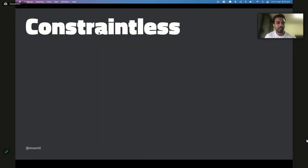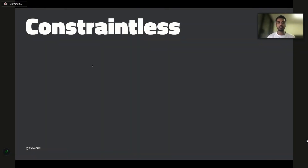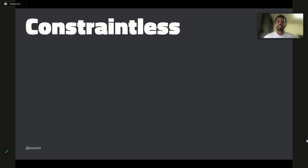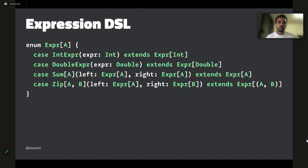Thanks Adam for the introduction. Let me get into this new library, ZIO Constraint List, that's in our ZIO ecosystem. ZIO Constraint List allows you to write programs using abstractions without worrying about type classes and executor level details. I know that's a really abstract statement, so let me get into a proper example. This is still a very toy example; we will get into a more realistic example later.